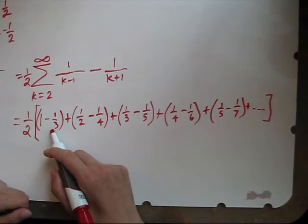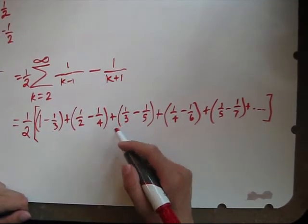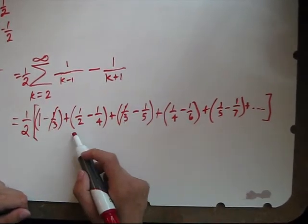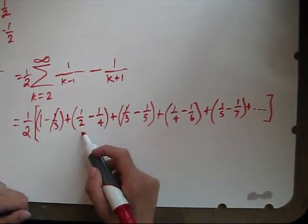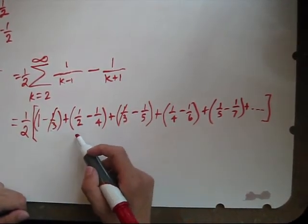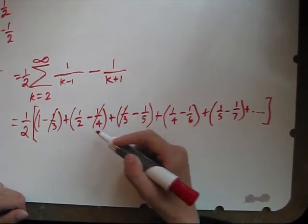Notice we have a negative 1 third here and a 1 third there, so those cancel. We have a 1 half, but I don't see any other 1 halves. Don't see a negative 1, so we'll leave those. Negative 1 fourth, positive 1 fourth, that's gone.